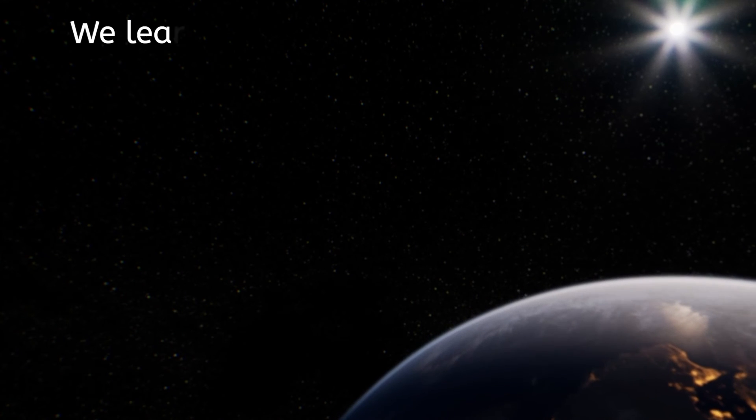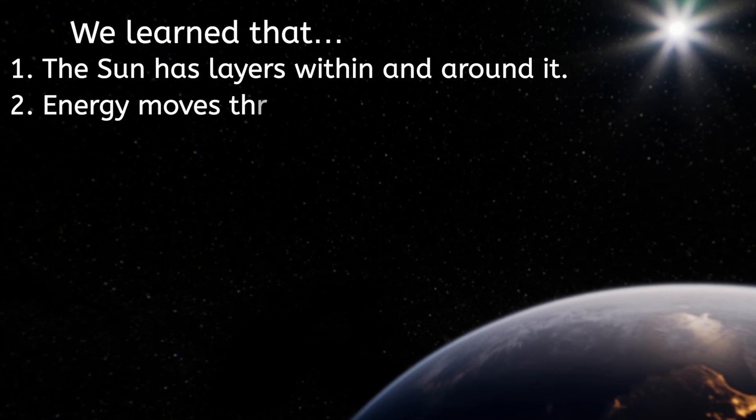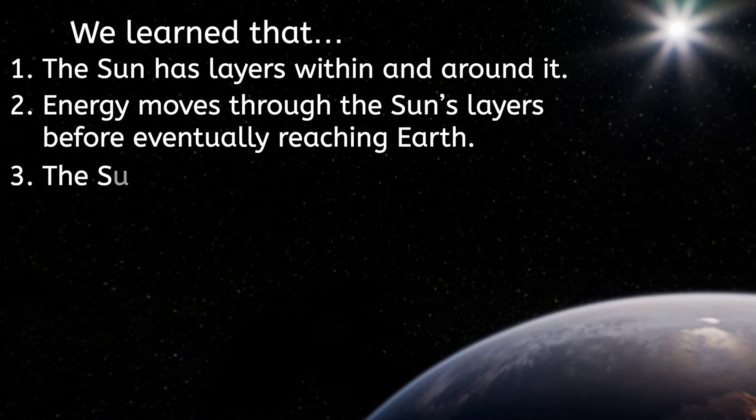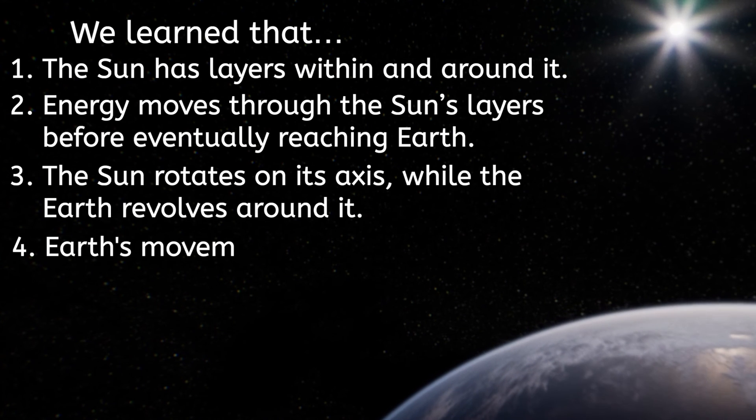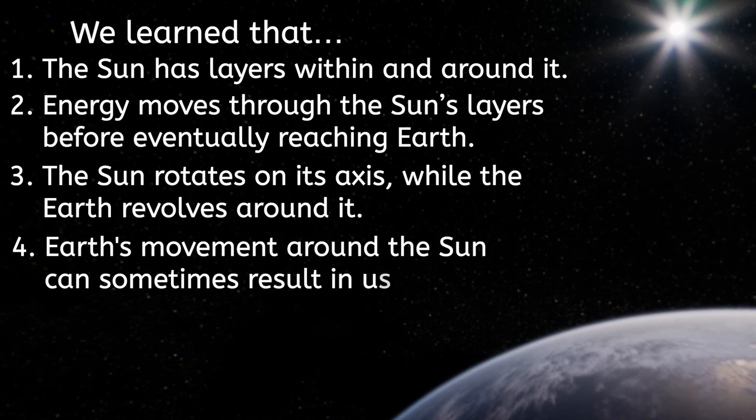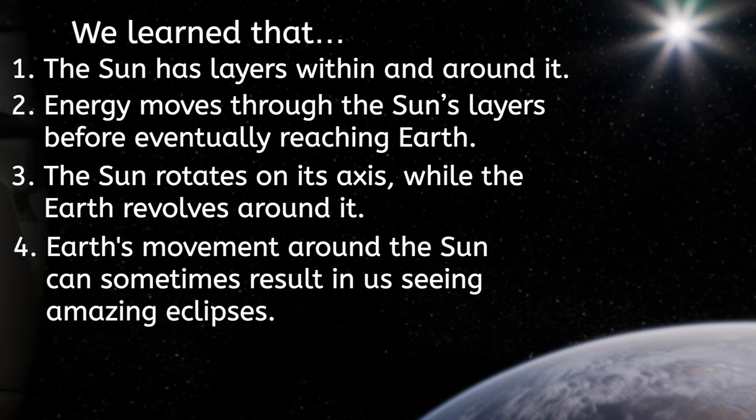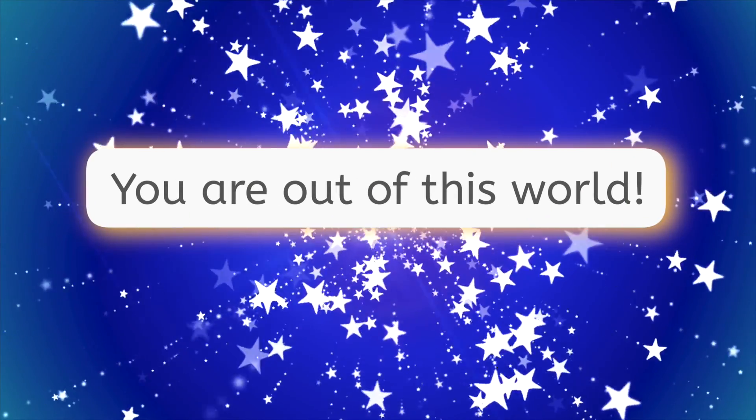We have spun all the way to the end of today's lesson. We learned that the sun has layers within and around it, and energy moves through the sun's layers before eventually reaching Earth. Also, the sun rotates on its axis while the Earth revolves around it. And finally, the Earth's movement around the sun can sometimes result in us seeing amazing eclipses. Don't forget to check out the engaging games and thought-provoking resources related to this lesson. And always remember, you are out of this world!